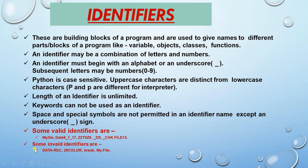Some invalid identifiers: 'data-record' — a hyphen is used between data and record, so this is wrong. '29color' — digits are used at the first position, so this is invalid. 'break' — this is a keyword. 'my.file' — a dot is used here, that is why it is invalid. You must learn what an identifier is and what its rules are.